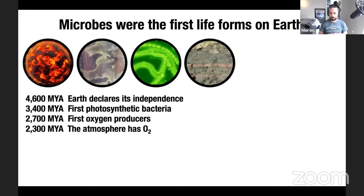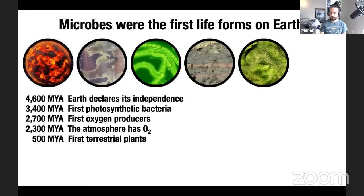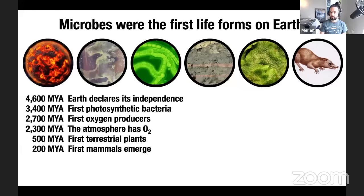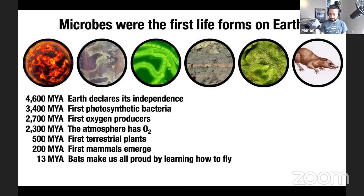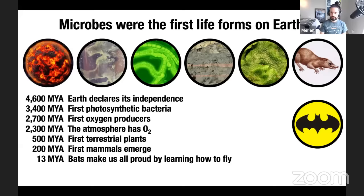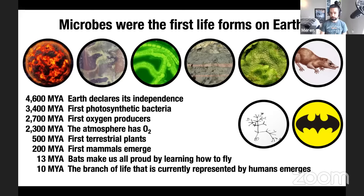Microbes worked under these circumstances for another 400 million years. By 2.3 billion years ago, the atmosphere had oxygen thanks to their efforts. This was one of the most fundamental events on Earth, facilitating more complex organisms to evolve. The ability to use oxygen as an electron acceptor was a huge change — like switching from steam engines to gasoline. First terrestrial plants appeared about 500 million years ago, and first mammals about 200 million years ago.